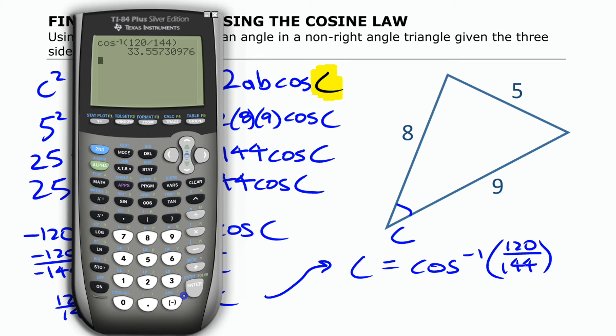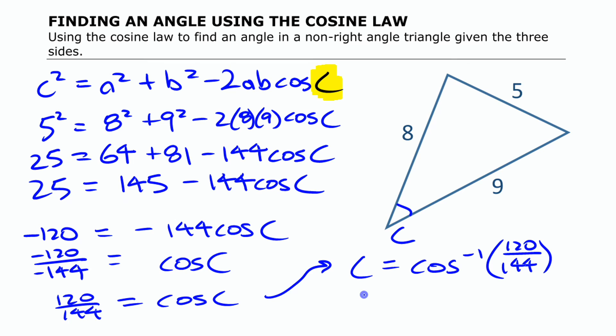The inverse cos function takes a ratio like 120 divided by 144, and it gives you an angle like 33.6, if you round that off, or 34 degrees roughly. So I'm going to say C is roughly 34 degrees.